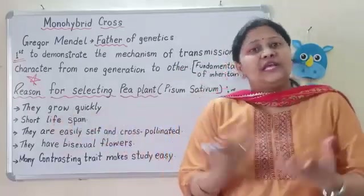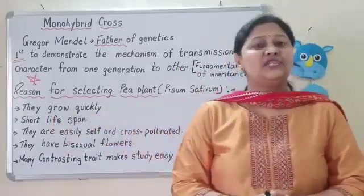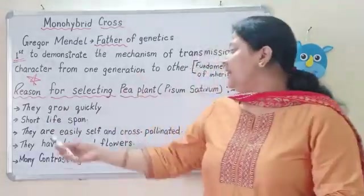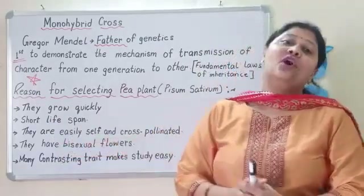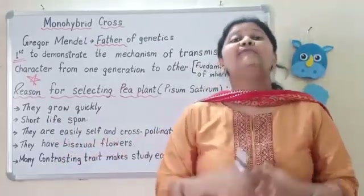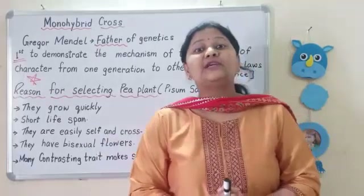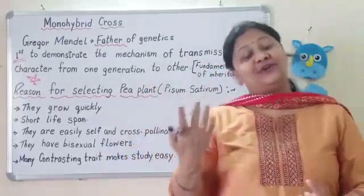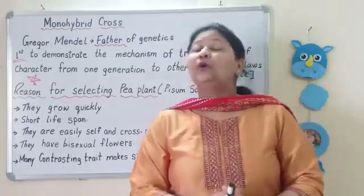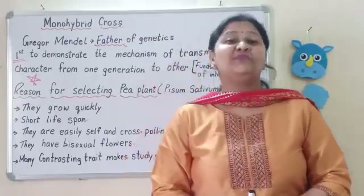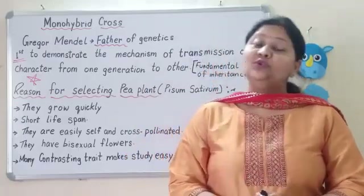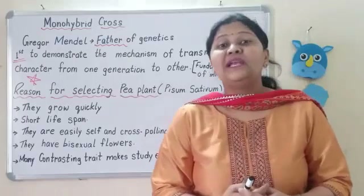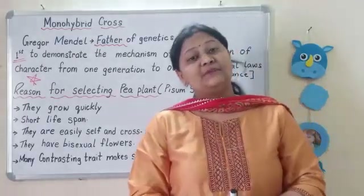The pea plant grows quickly, requires less maintenance, and is easy to grow. They are also easily self and cross pollinated. They have bisexual flowers — that is, both male and female flowers are present — so self pollination will happen. Cross pollination can also happen. So these are positive characteristics, which is why Mendel selected the pea plant for his experiment.